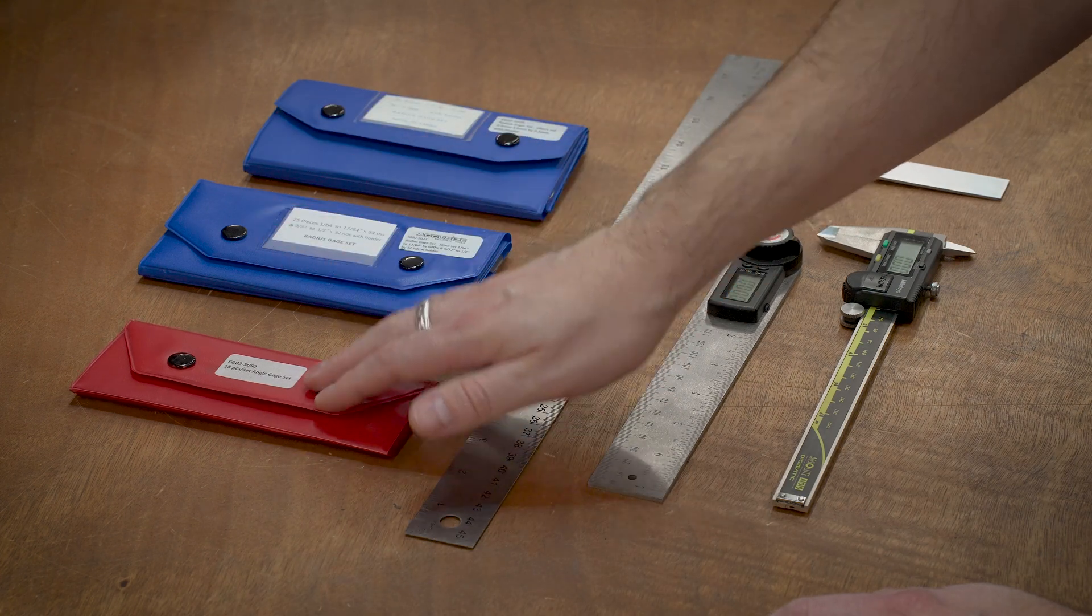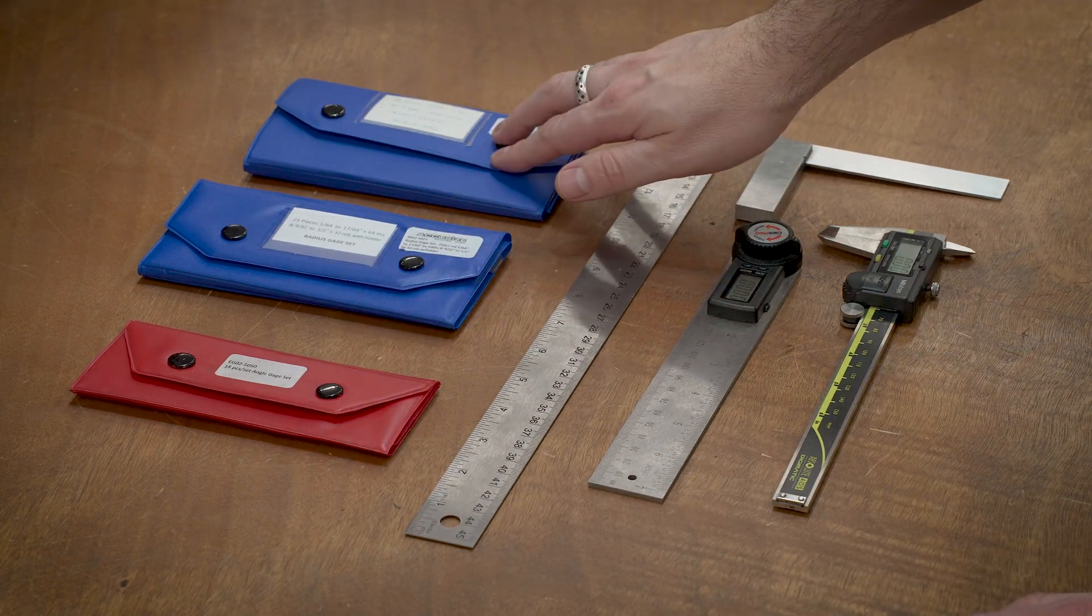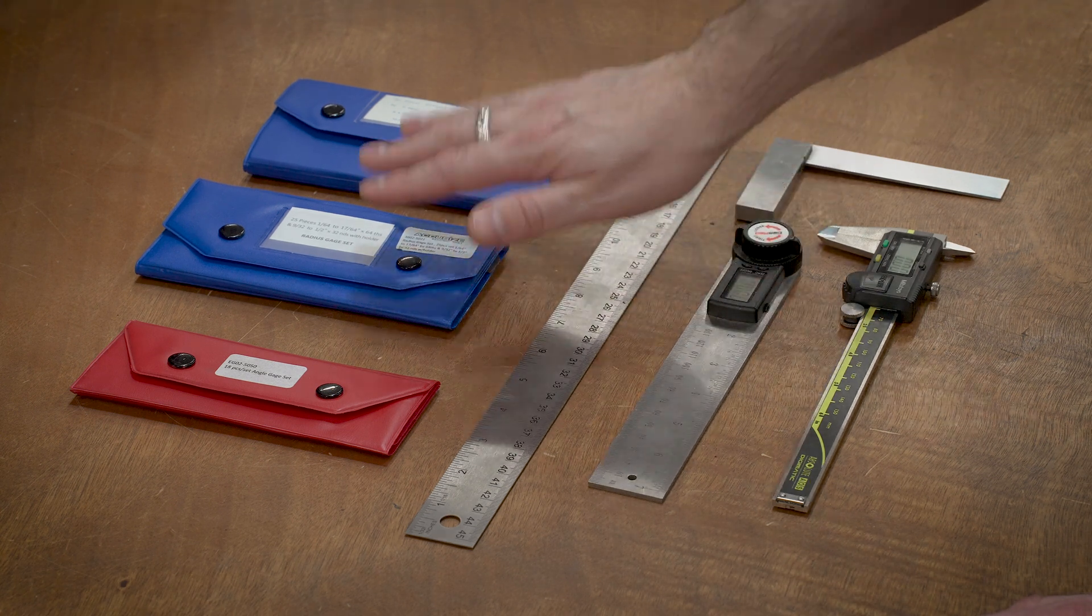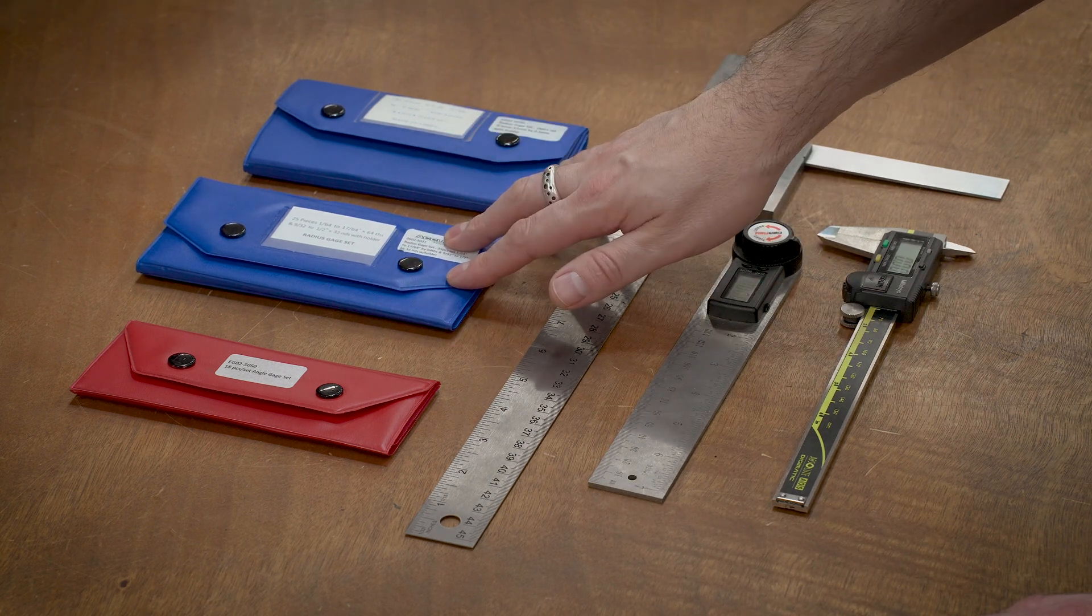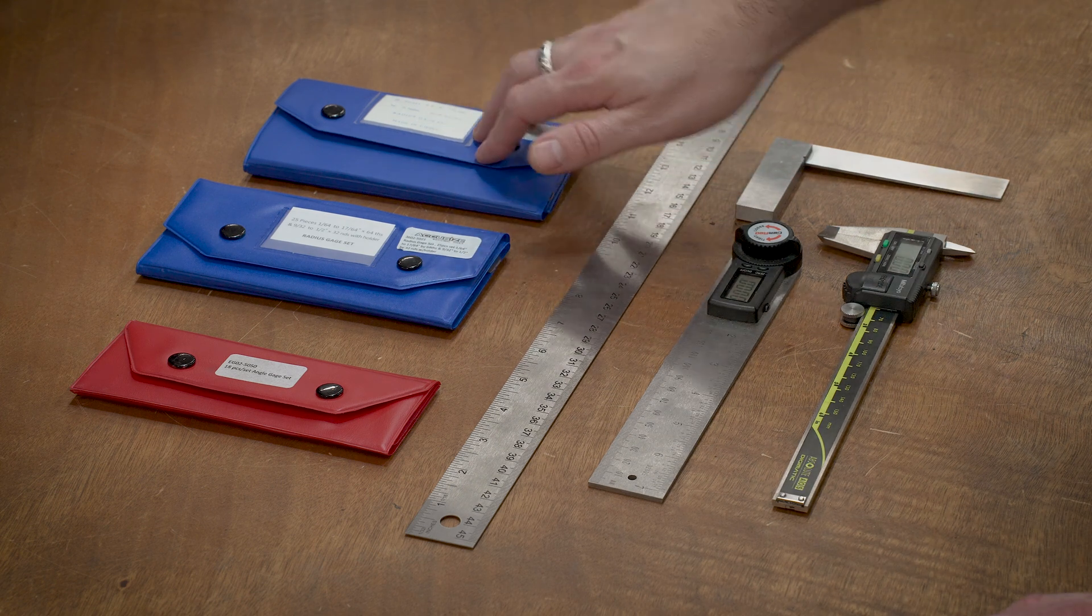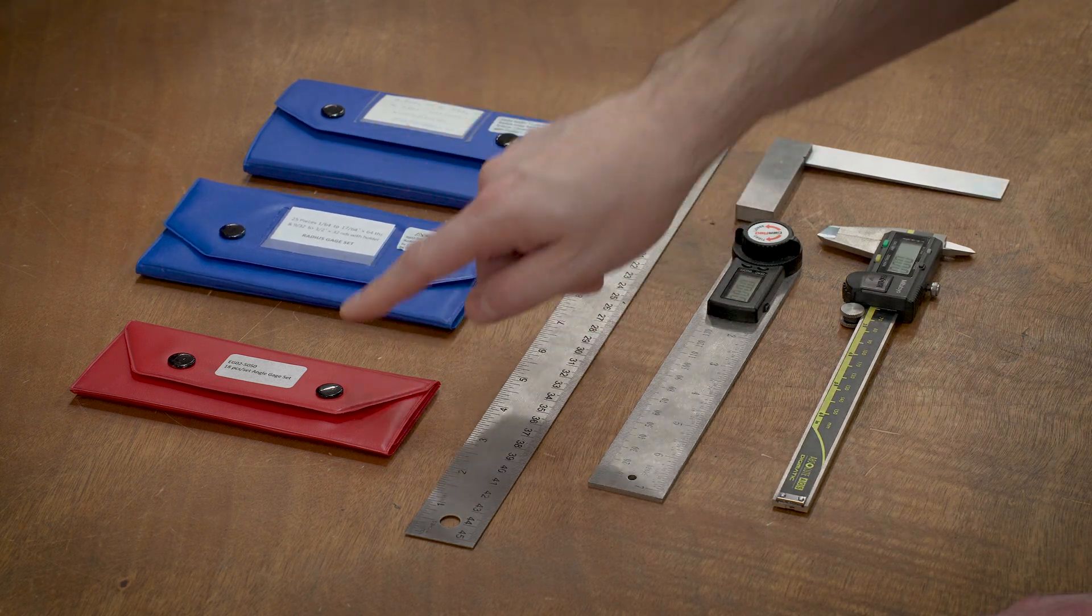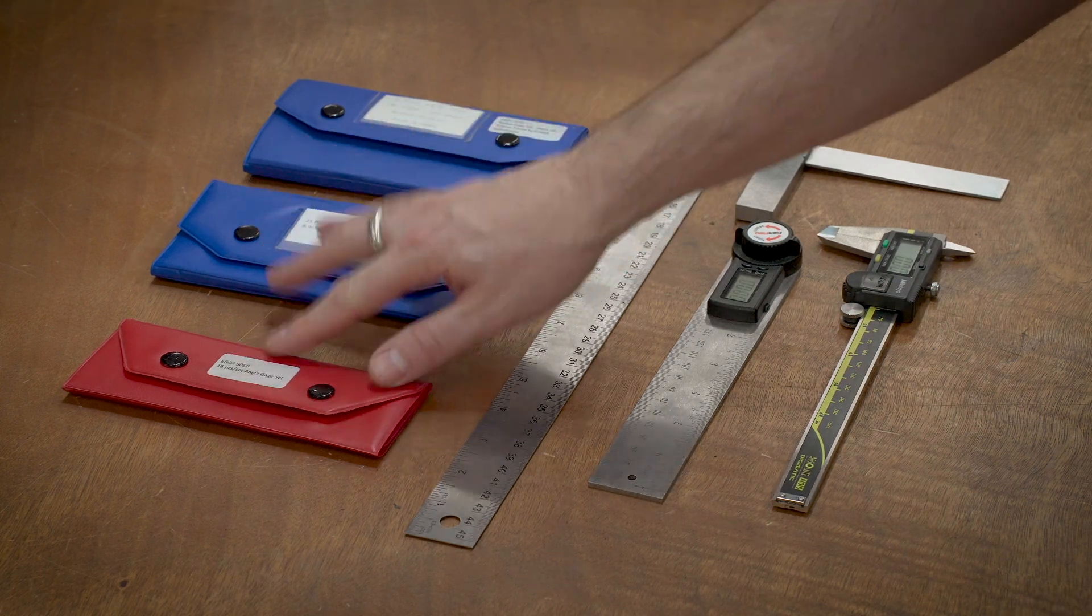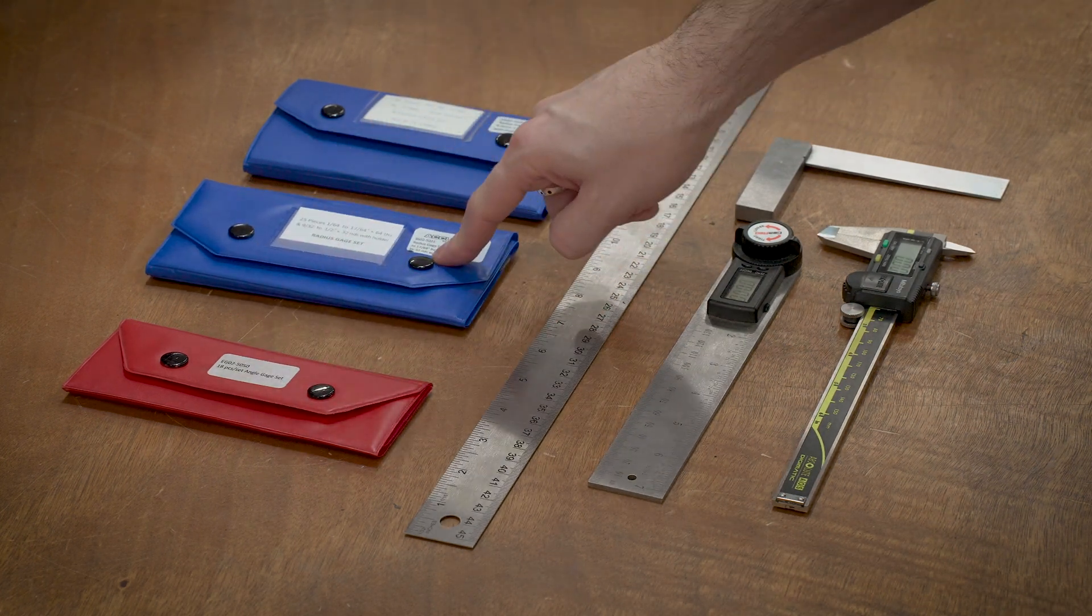And then, of course, we have the angle gauge and radius gauge sets. I have two different sets. You can get these in tons of different sizes. These are kind of the most common ones I use, but I have them both in metric and standard.